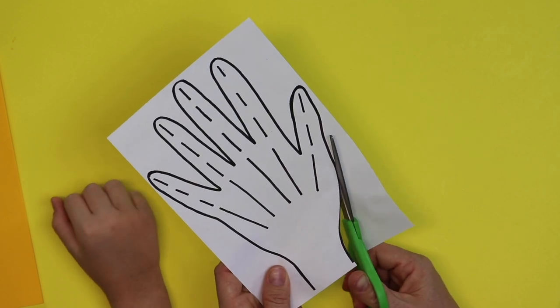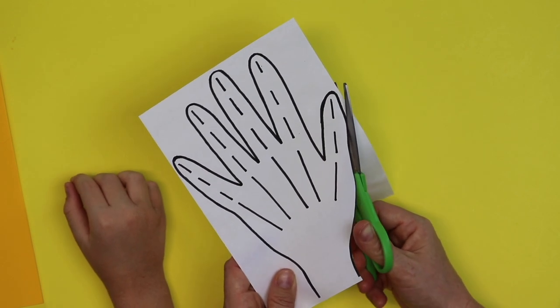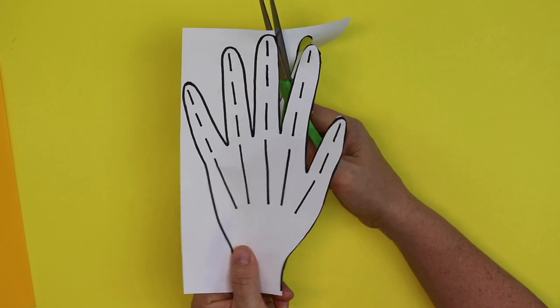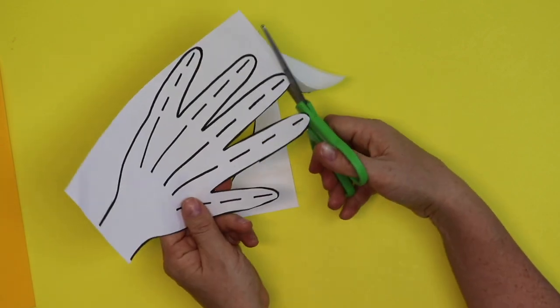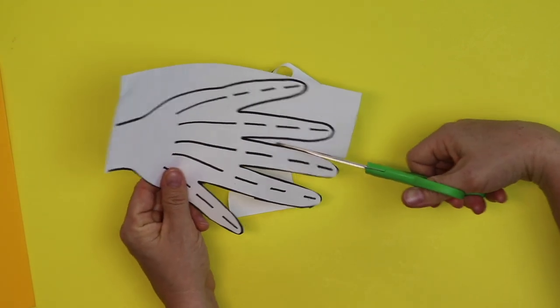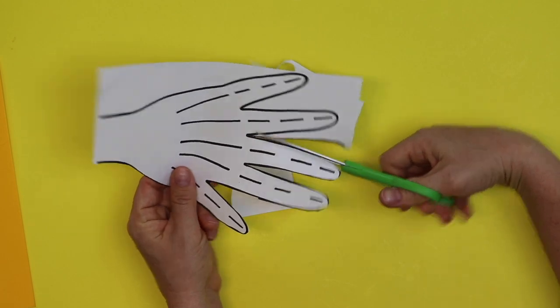First we're gonna start by cutting out the stencil. Just cut it around the black line. Brooks what's your favorite thing that you do with your hands? Building. Building. You're a builder aren't you? That's why you love the winkles so much. Yes. Yes.